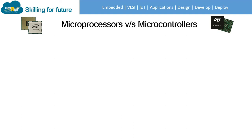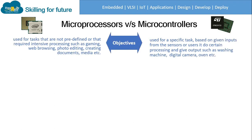Now, microprocessor versus microcontrollers. Regarding objectives: microprocessors are used for tasks that are not predefined or require intensive processing, such as gaming, web browsing, photo editing, creating documents, and media. Microcontrollers are used for specific tasks — based on input from a sensor or user, they perform certain processing and give output, such as in washing machines, digital cameras, and ovens.